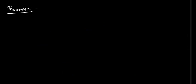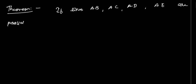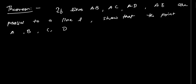Now let us look at the next theorem. If lines AB, AC, AD, and AE are parallel to a line L, then show that the points A, B, C, D, E are collinear.